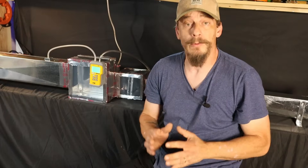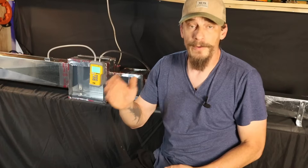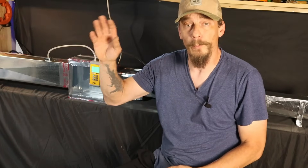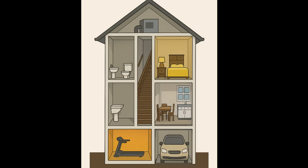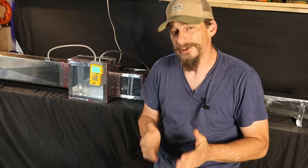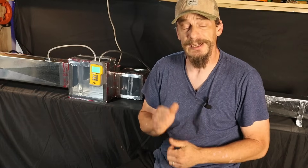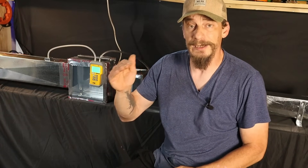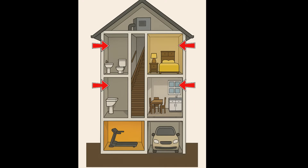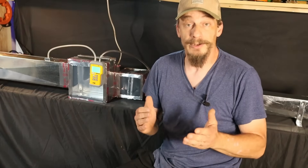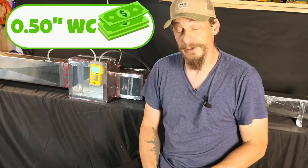One of the first things we have to figure out when we start designing our system is how far away is the furthest room from where the unit is going to be located. If our unit is in the basement, the furthest room would be up on the second floor on the opposite side of the house. If it's in the attic, the furthest room might be on the first floor or even down in the basement. We start with this room first because if we can deliver the proper amount of air to that furthest, hardest-to-reach room, all the other rooms will get the air they need, and we'll have a well-designed duct system.